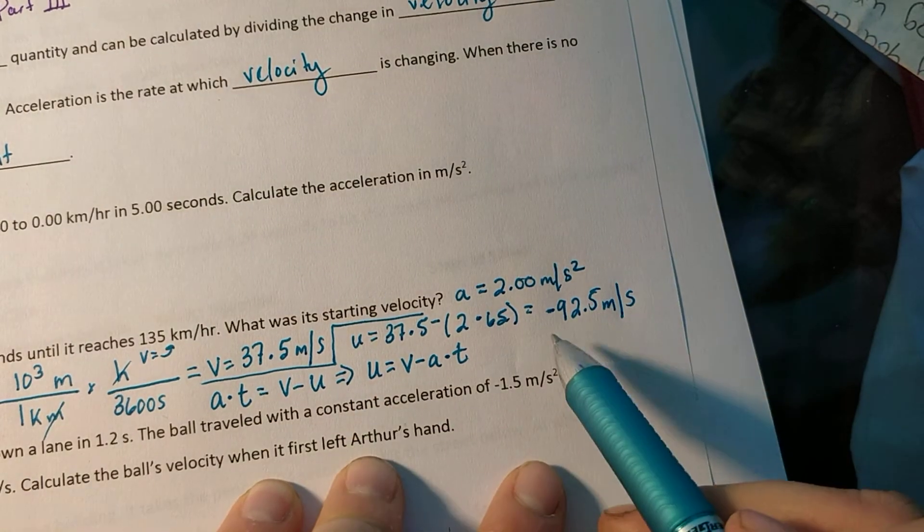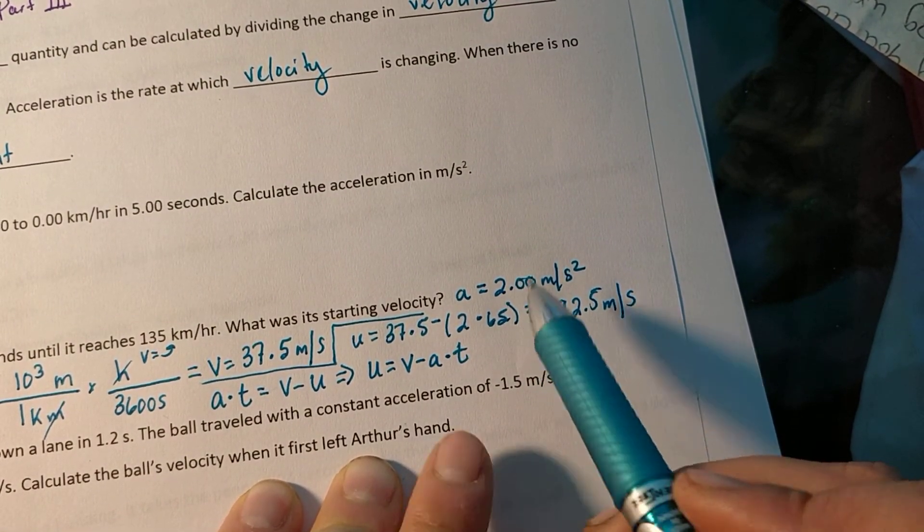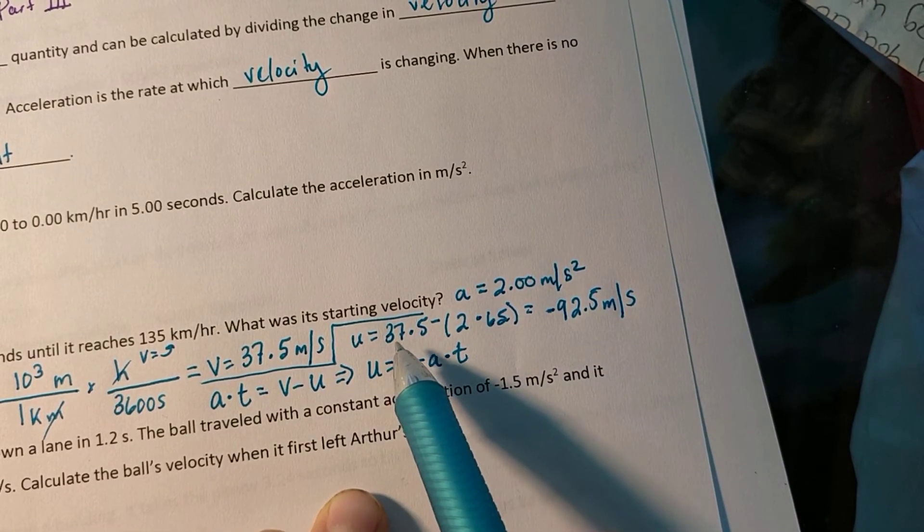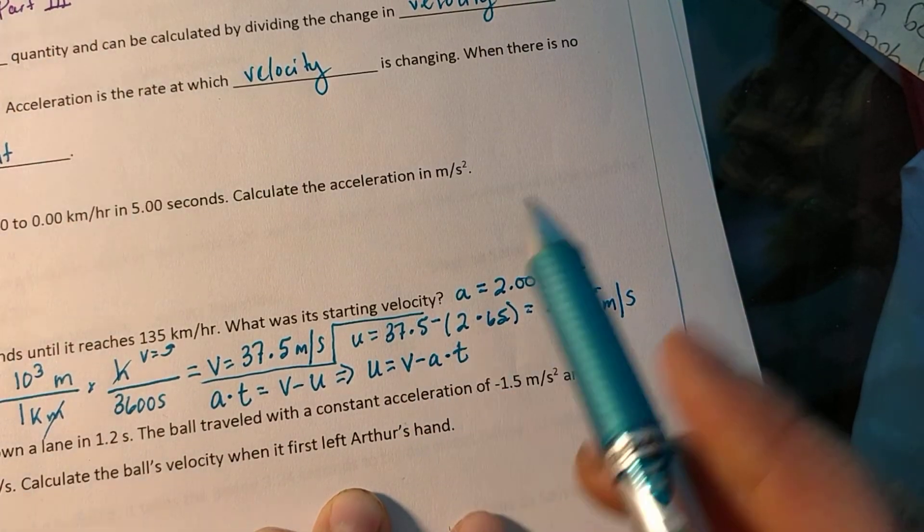So what this means is that the car was traveling with this speed in the negative direction and experienced a positive acceleration until it came to a stop and then was traveling in the positive direction at 37.5 meters per second.